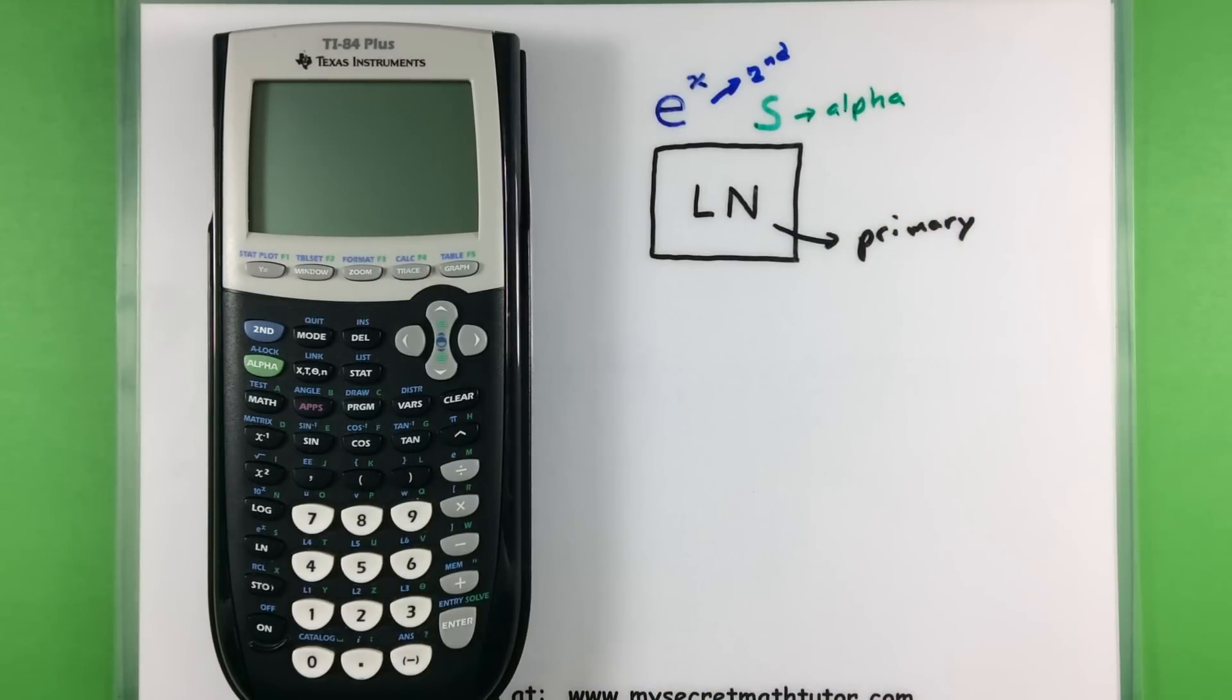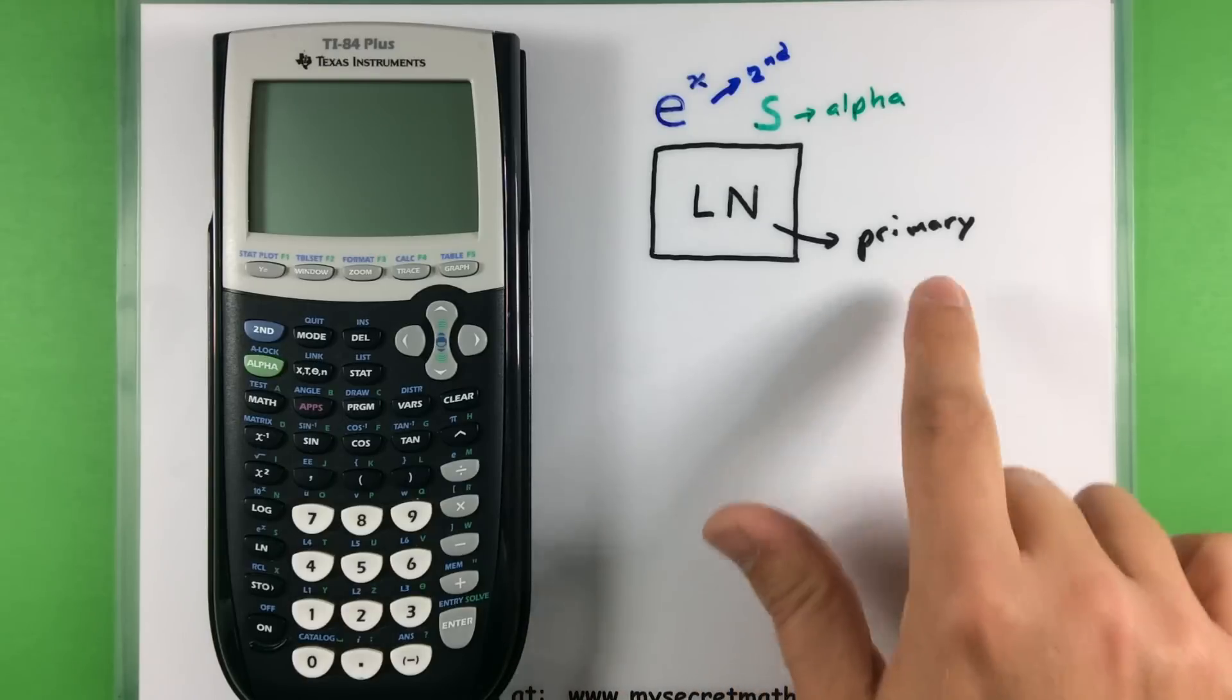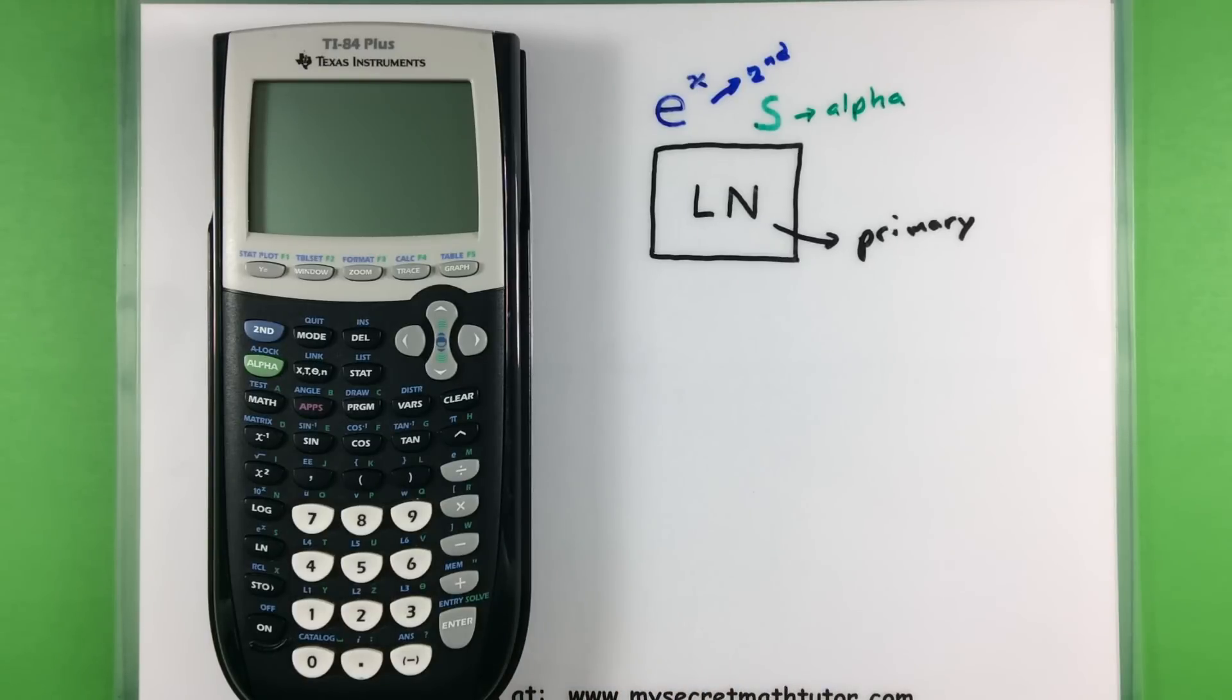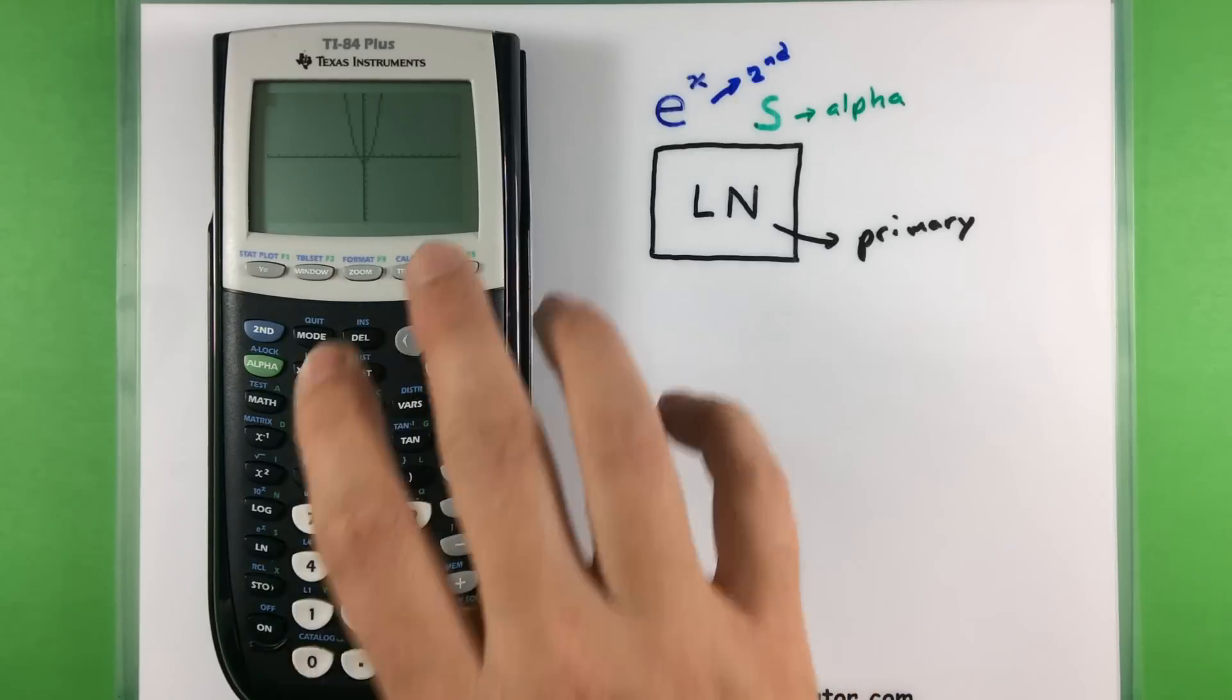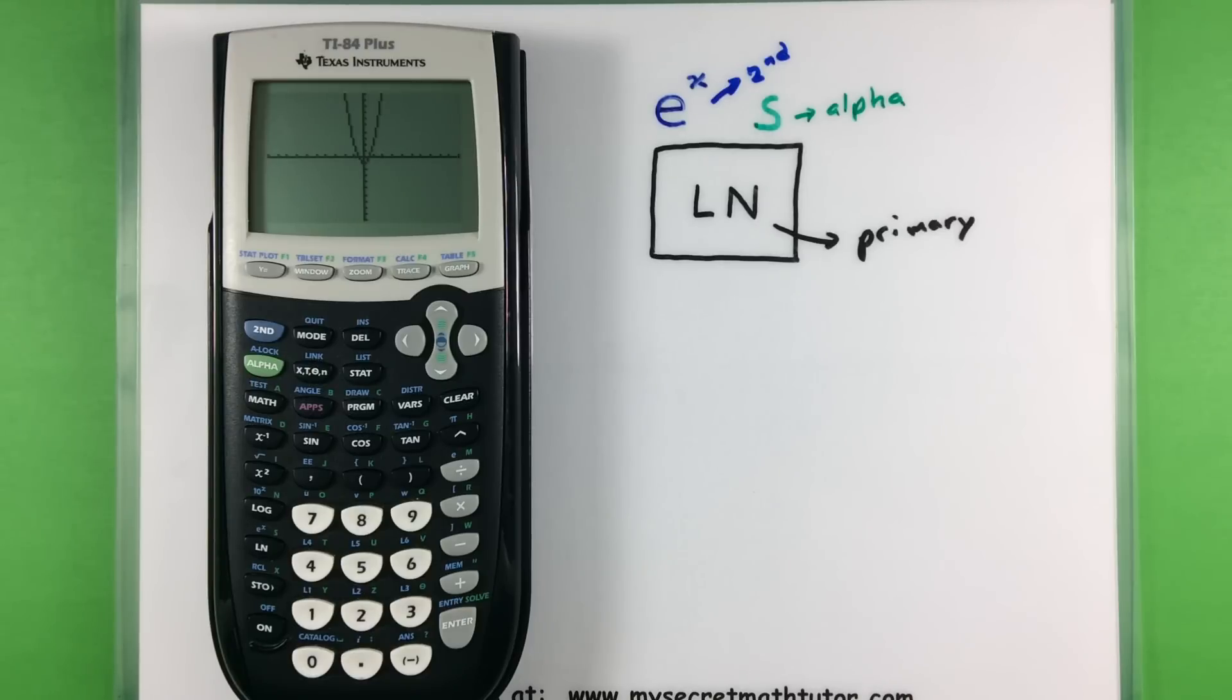Now we won't be getting into any of the secondary or alpha functions yet. We'll mainly stick with those primary ones. So stay focused to what's on the button itself. And that's a good indication of what we can do. Now we can turn it on and off and now we want to know that this main screen that we're on with just a blinking cursor—that is what we consider our home screen. In other videos you'll see me doing some stuff on graphs and some statistics. And this is not usually where you end up doing a lot of your calculations. If you just want to add and subtract you want to be on that home screen.